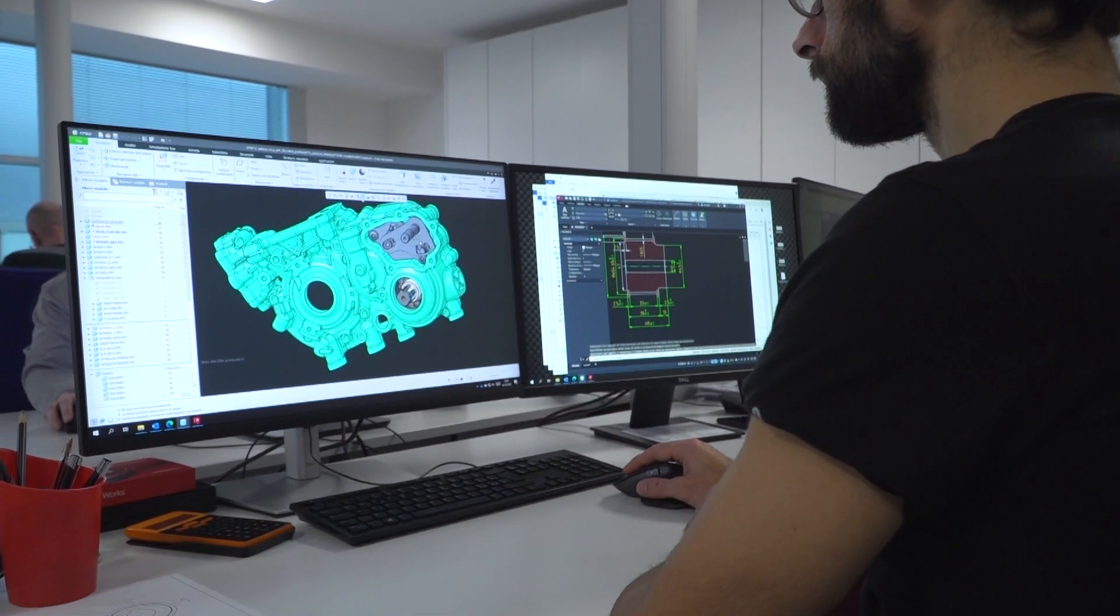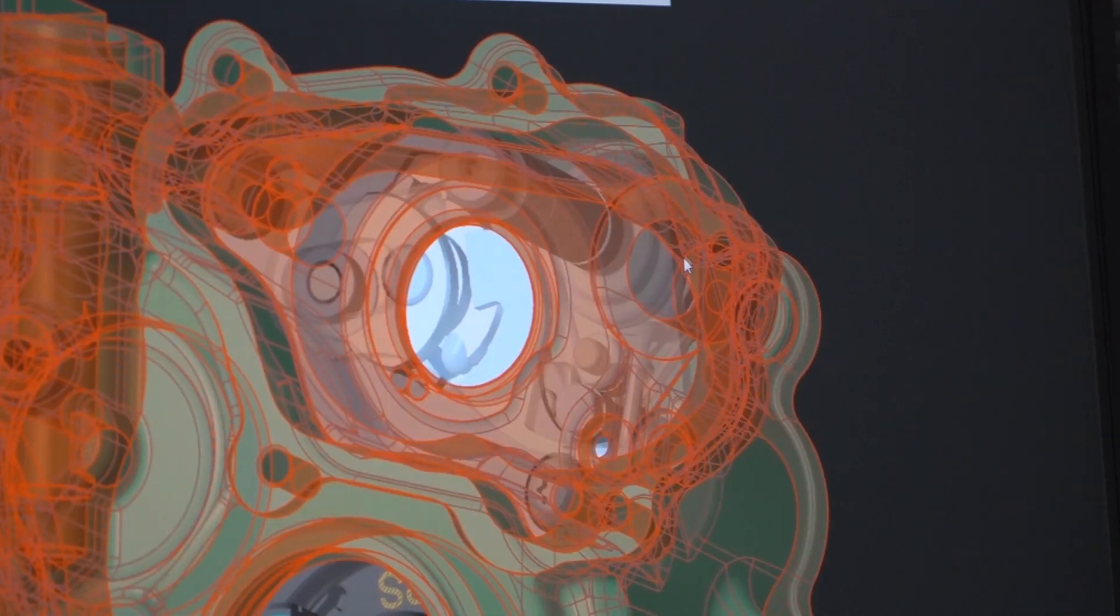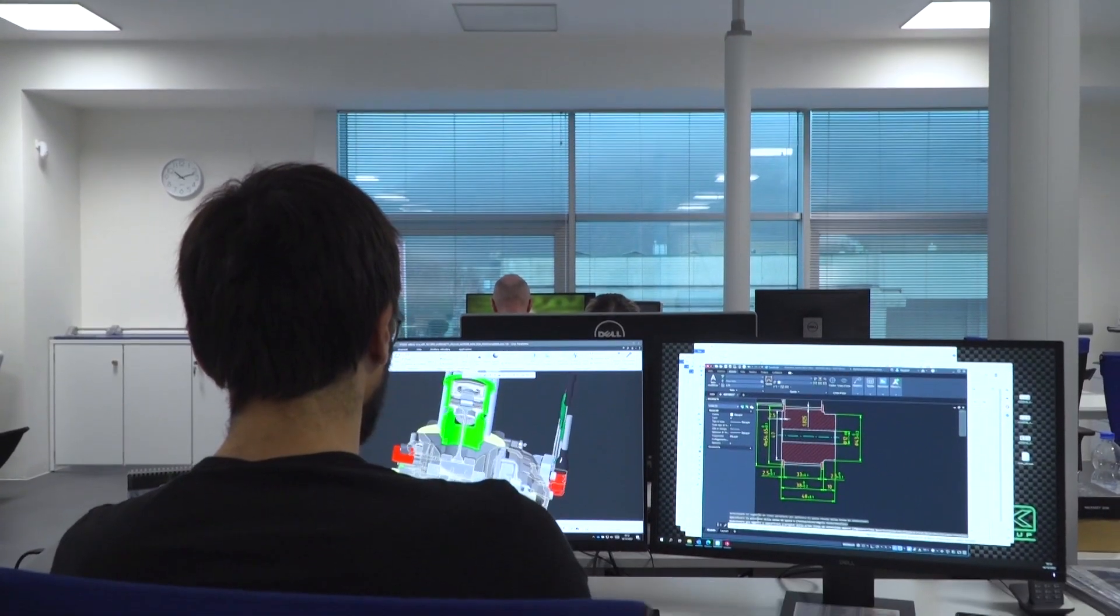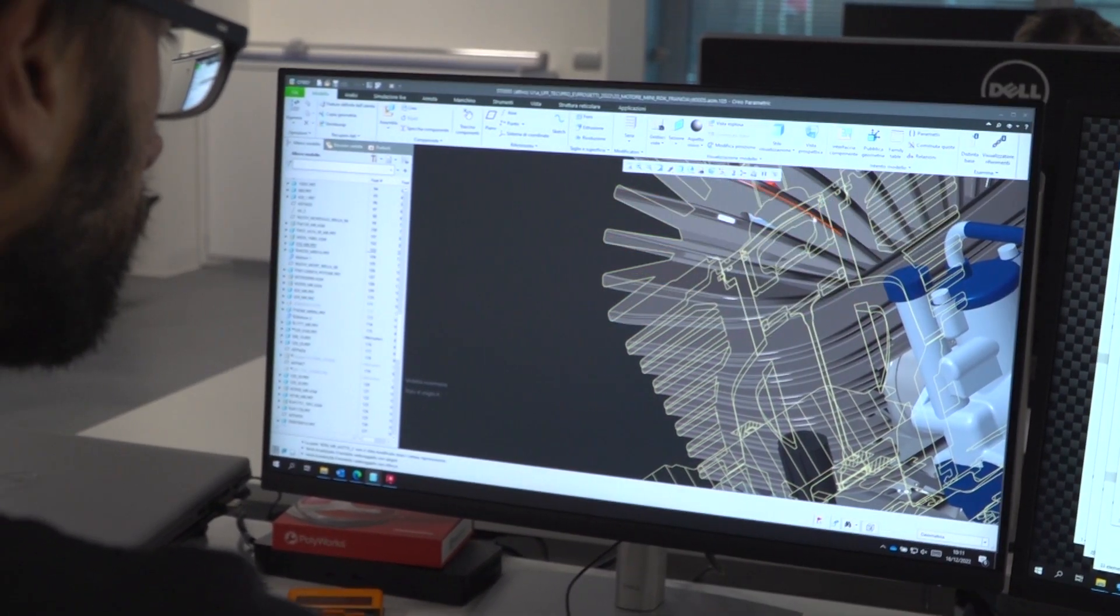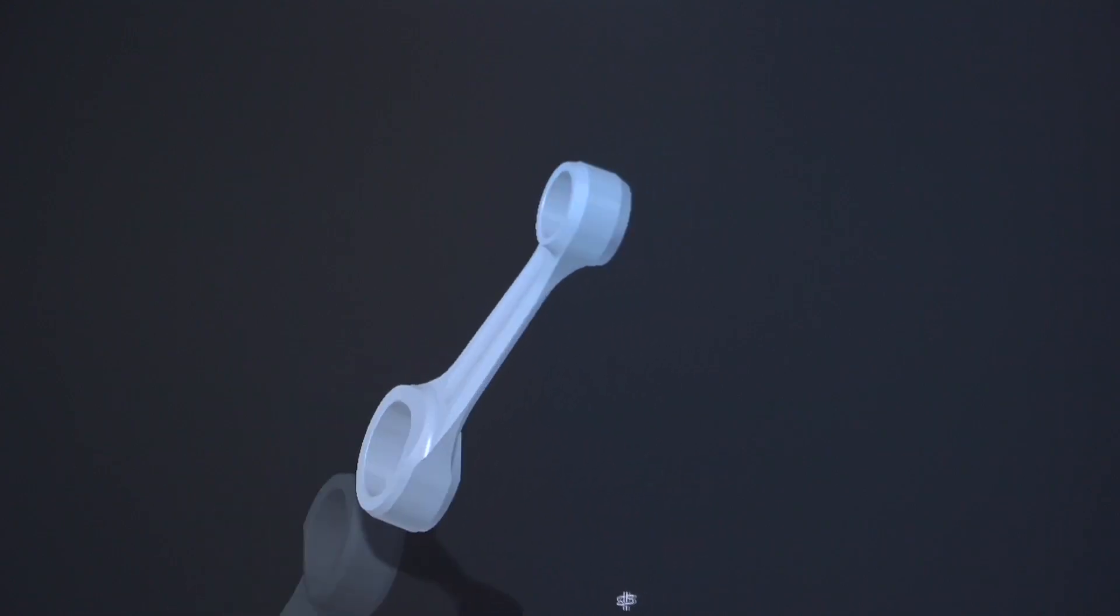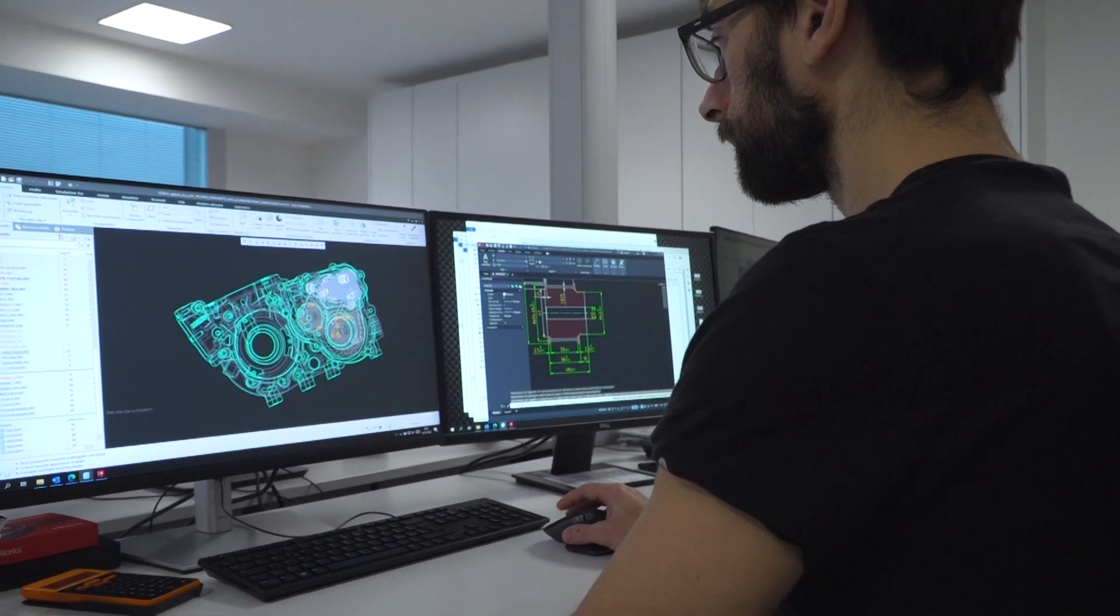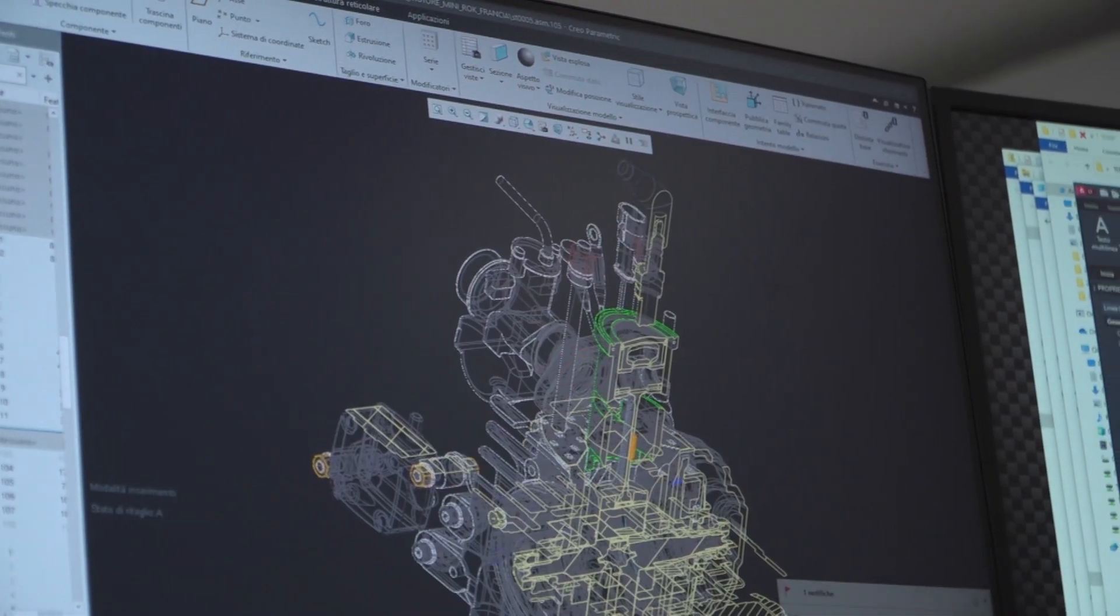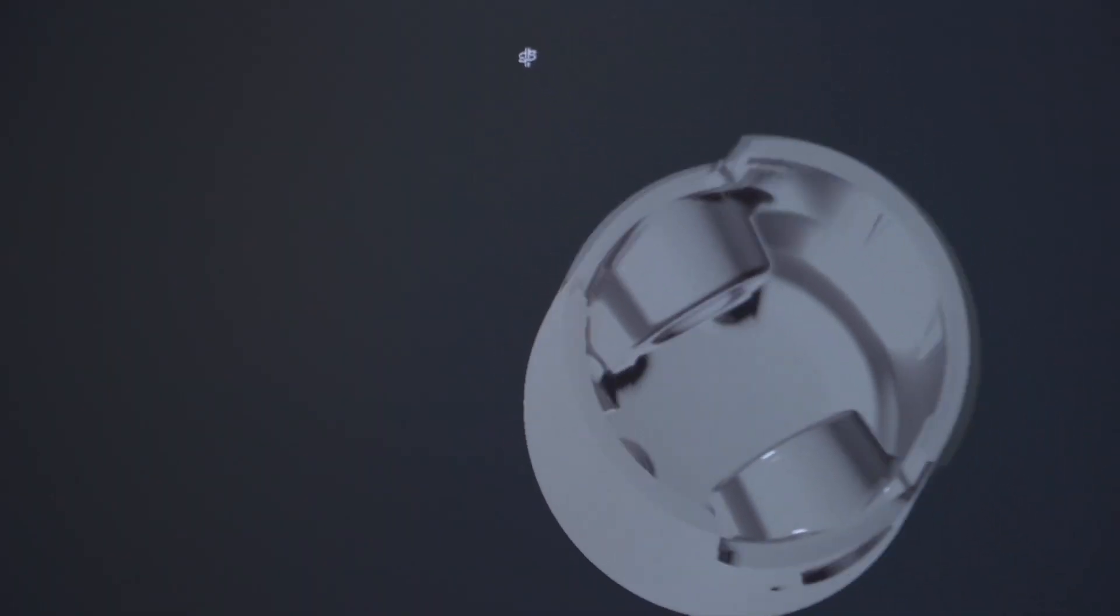Thanks to state-of-the-art software, OTK Kart Group's engineers conceive and design every single detail of the different engines in the Vortex and Rock range with 2D and 3D models. In addition to conceiving shapes and features that will affect performance and reliability of the final product, during this phase all the machining operations that the part needs to undergo are also simulated in order to optimize production times and guarantee the highest possible quality level.